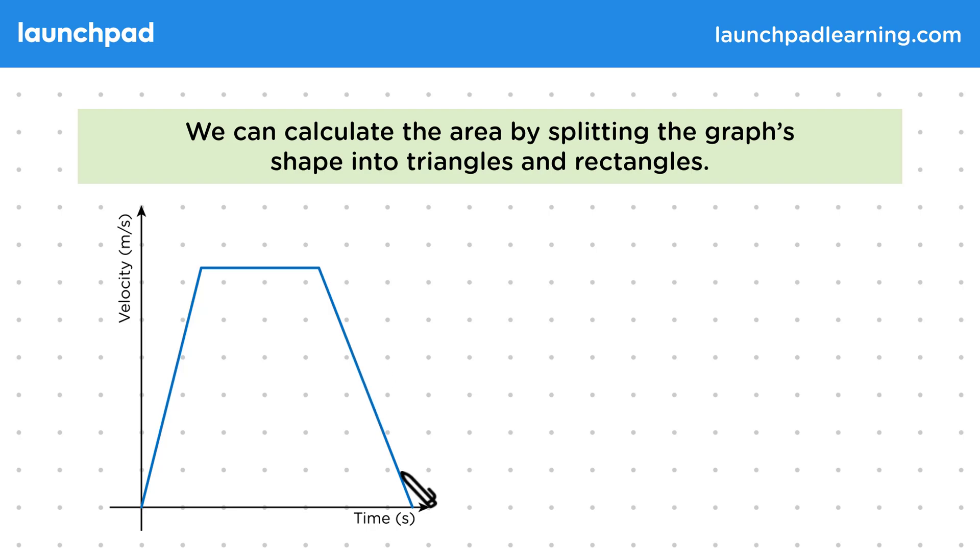Since the velocity is changing, we can't just do velocity multiplied by time. We have to calculate the area under the graph instead. You could use the formula for the area of a trapezium, but this isn't given to you and you aren't expected to know it for science exams. Instead, we can split up this shape into two triangles and a rectangle.